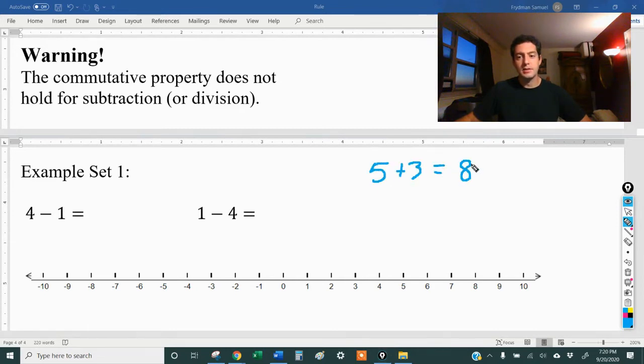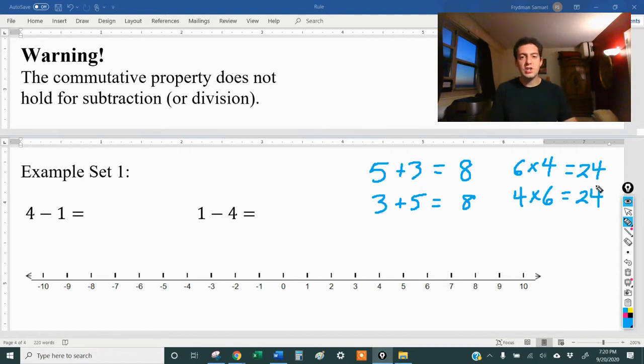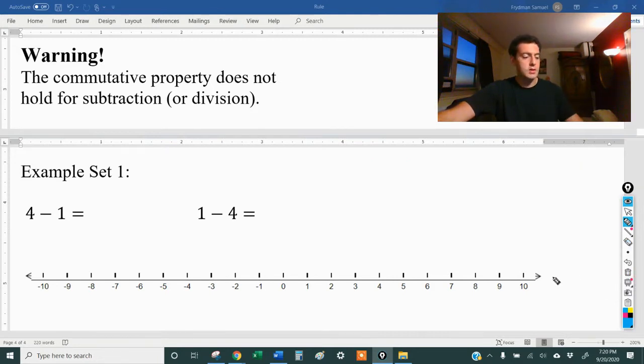What is three plus five? That's also eight. What is six times four? That is 24. What is four times six? That is also 24. So with addition and multiplication, we can switch the order of the numbers and get the same answer. But that does not work for subtraction or division. So let's talk about subtraction in this video.